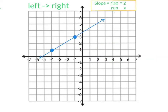Here I'm going to draw my little route that we're going to travel. I observe that I'm going to rise one, two. So the rise is two. And from here, I'm going to run one, two, three. So the run is three. So our slope is two-thirds.